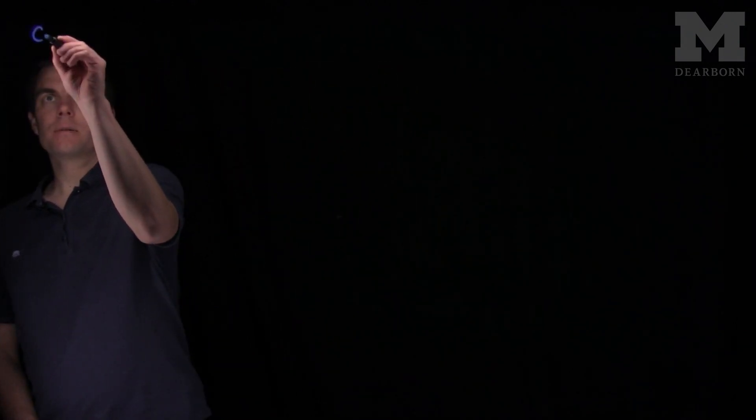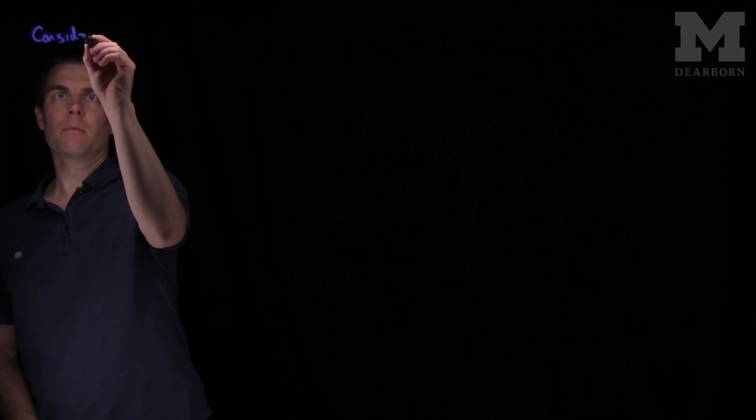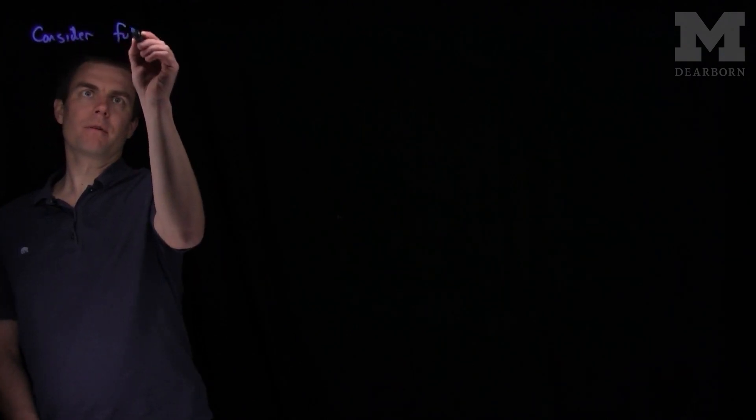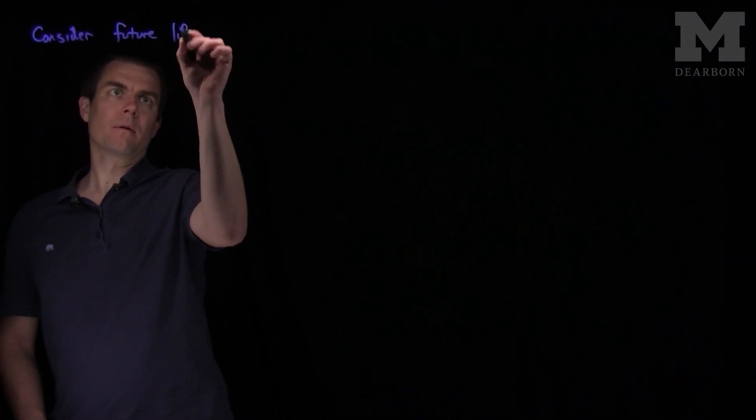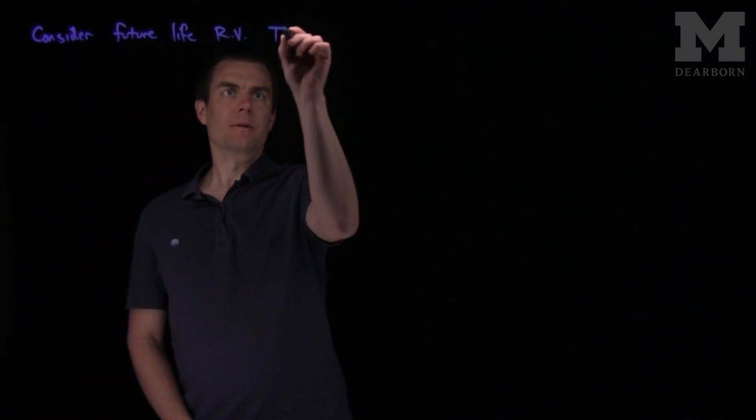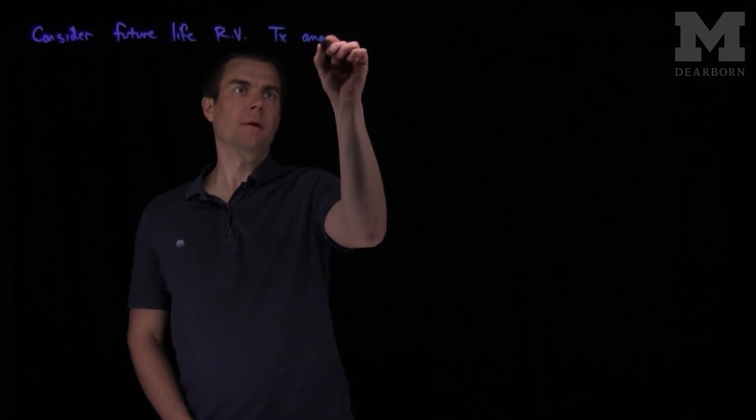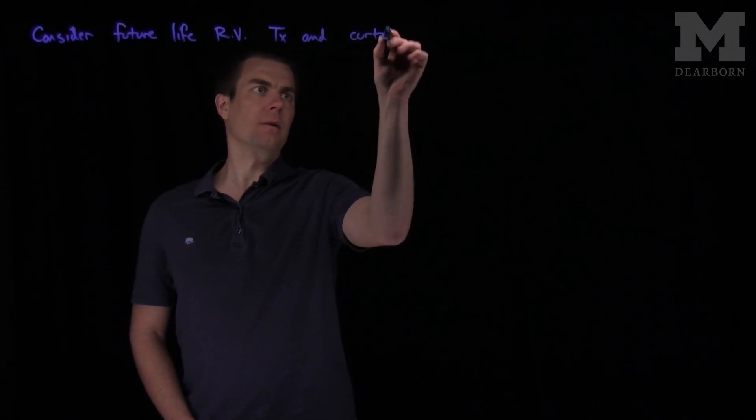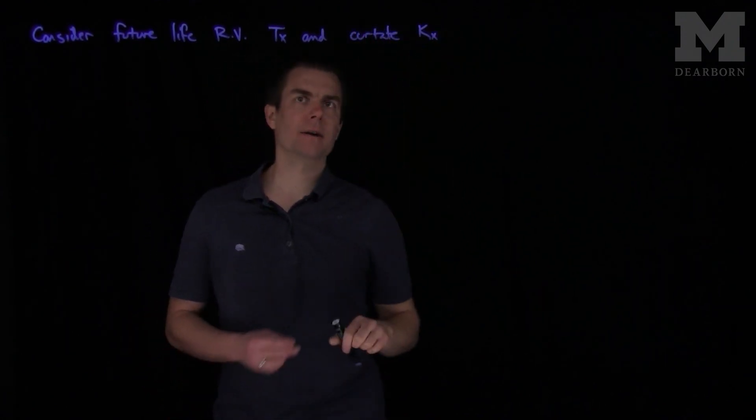Hello students. In this video we'll discuss present value calculations for random variables that involve annuities. We'll consider the future life random variable Tx and Curtate random variable Kx.